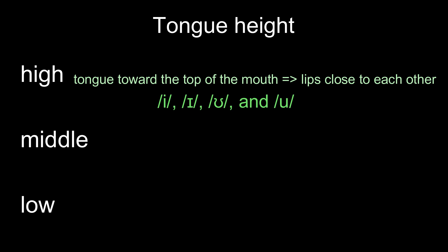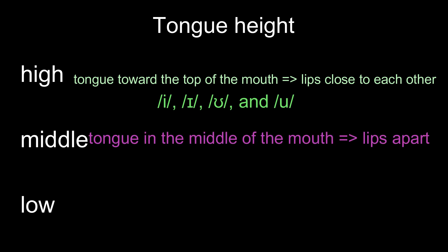The middle position is where the tongue is placed in the middle of the mouth. The lips are a little apart from each other. Vowels that are produced in the middle, called middle vowels, are E, U, U, and U.